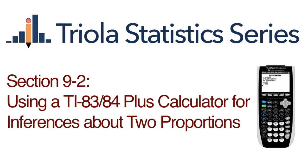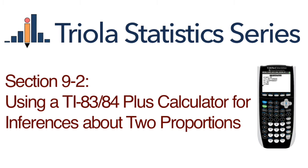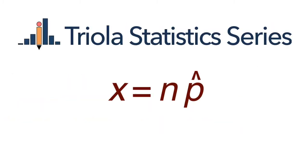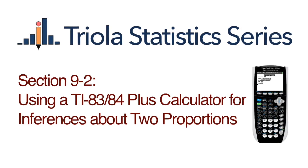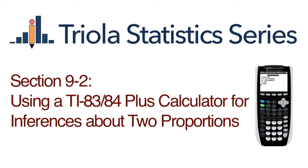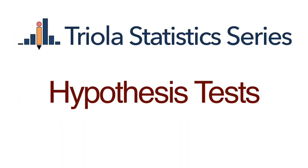You must know the sample size n and the number of successes x for samples from each of the two populations. If you don't know the number of successes but know the sample size and sample proportion, you can calculate the number of successes by multiplying the sample size by the sample proportion, then round to the nearest whole number.